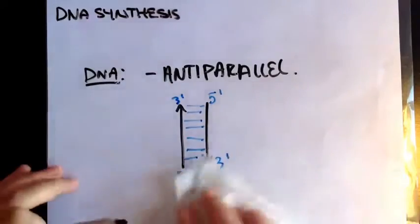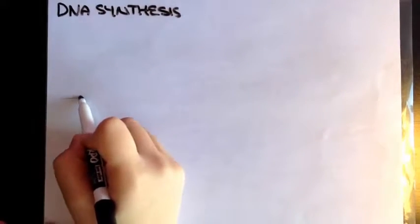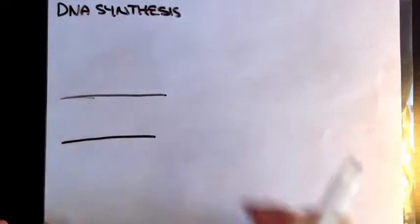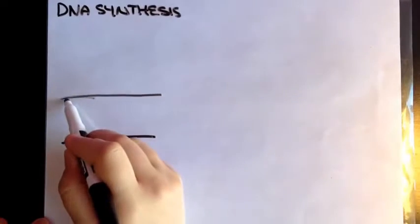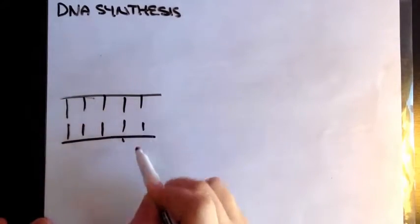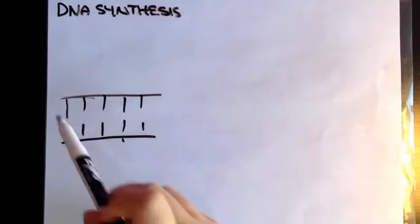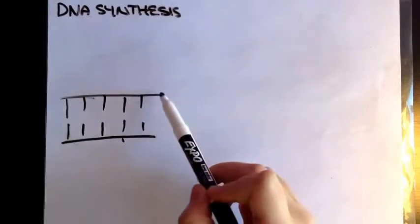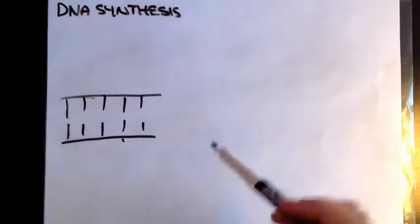So now that you know that, we'll go over the actual concept of the leading strand and lagging strand. Imagine I have my DNA helix — that's my DNA helix with base pairs going on. At one point, when I'm synthesizing it, it's got to open up. So let's say it opens up like this.